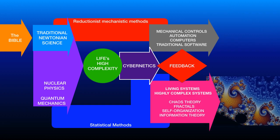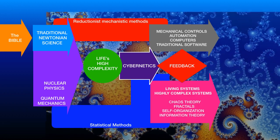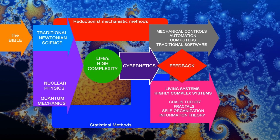The other half of cybernetics got interested in really complex problems, such as living systems, and very large organizations, and even whole societies. Feedback explained a lot of things. Information theory and chaos theory were born, and fractals became a useful form of mathematics.